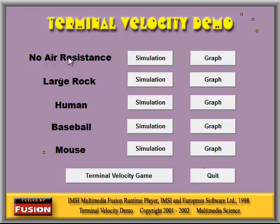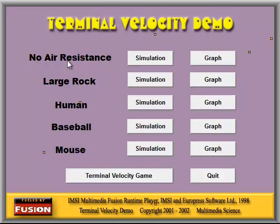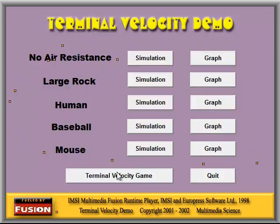In this demo, we're going to look at a number of situations where objects are dropped with no air resistance — a large rock, a human, a baseball, and a mouse.